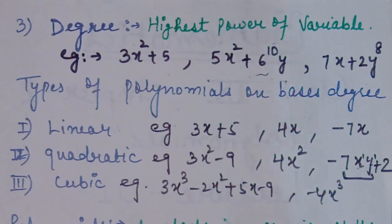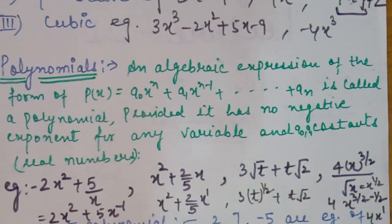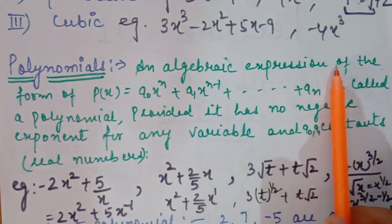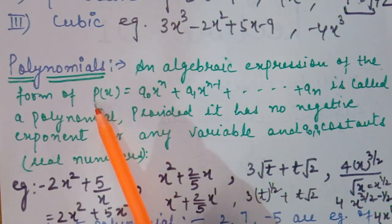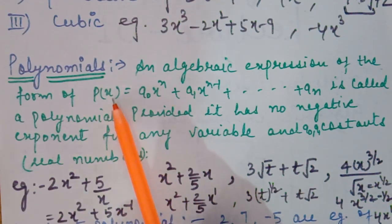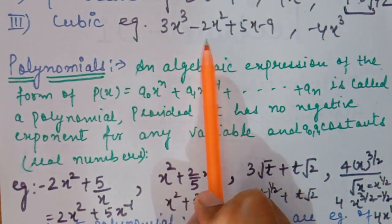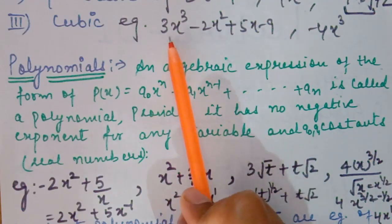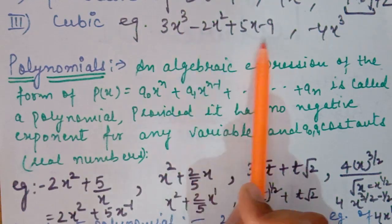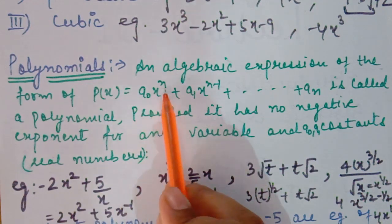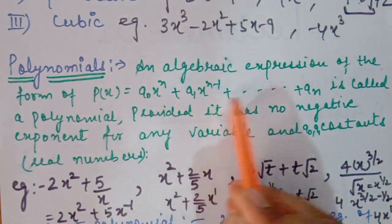Now you already know about algebraic expressions, variables, constants, terms, coefficients, degree, and types of polynomials. Finally we reach the definition of a polynomial. A polynomial is an algebraic expression of the form p(x), where p represents the polynomial and x represents the variable present in the expression. If the variable is y, we write p(y).